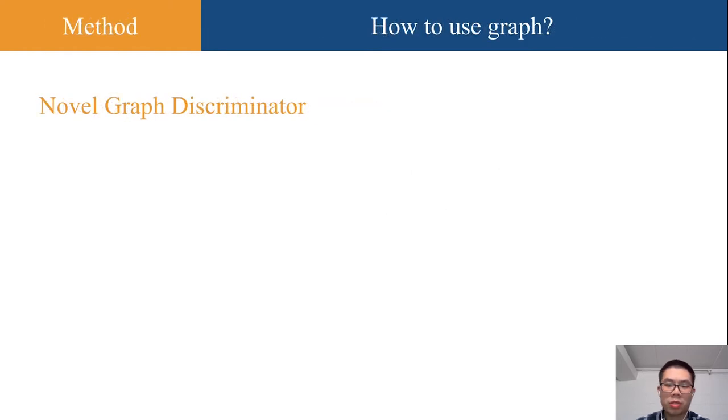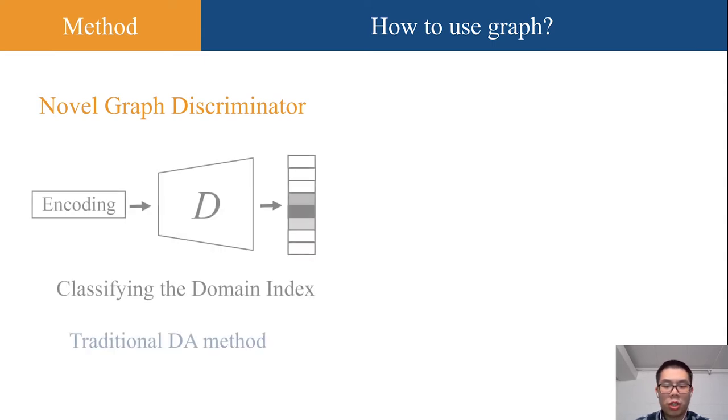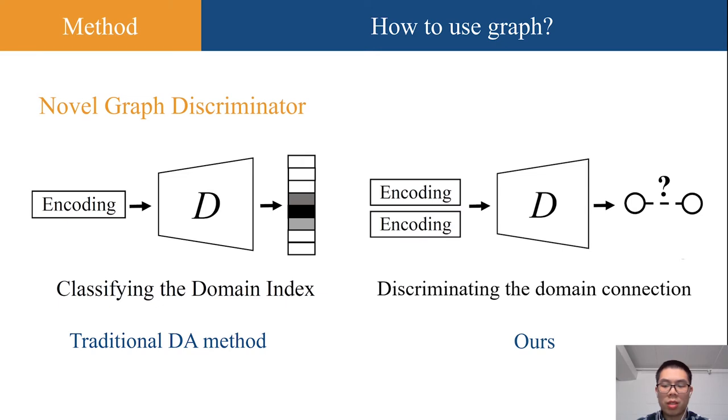Then comes the question, how to use the graph? The key point here is to use a novel graph discriminator. For traditional method, the discriminator will classify the domain index, where ours will try to discriminate the domain connection.